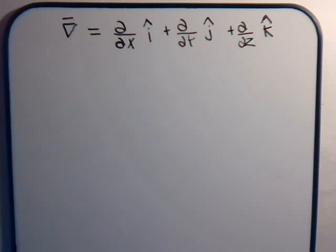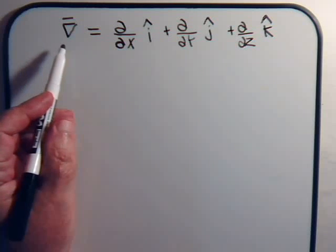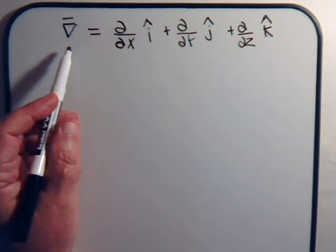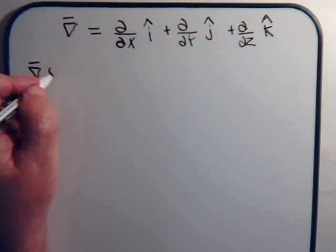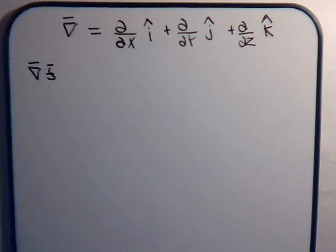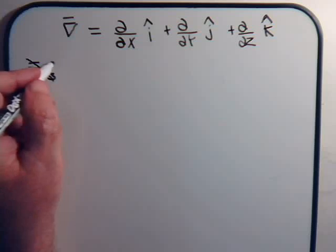So we can take the dot product of the del operator with other vectors, and we can take the cross product of the del operator with other vectors. Now, as far as a direct operation, it can only operate directly on scalar quantities. As you've established in other videos, if this was a vector here, that makes no sense.